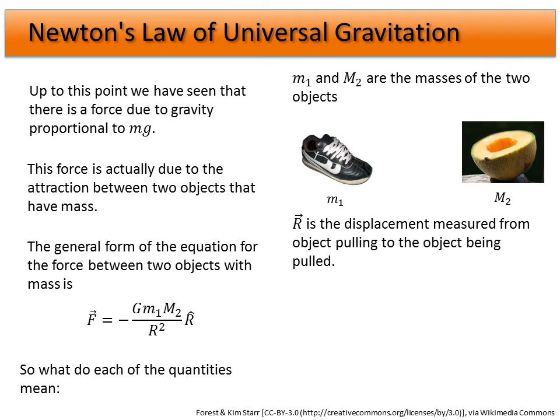The next question is, what is r? And you'll notice that r is a vector. In this equation down here, r is a magnitude squared. However, we have this unit vector here. We'll talk about that in just a second. But, r is the displacement vector measured from the object pulling to the object being pulled. Sounds a little bit complicated, but we need to get our direction straight. Otherwise, we introduce a minus sign in the wrong direction.